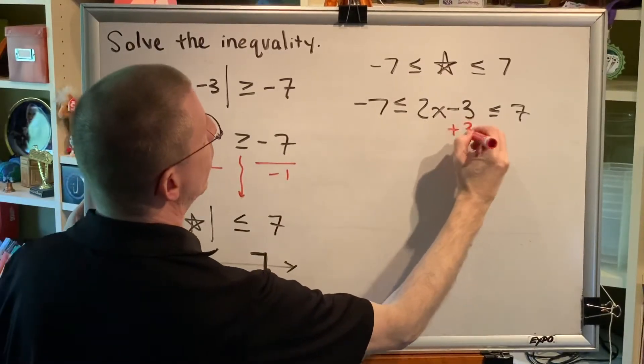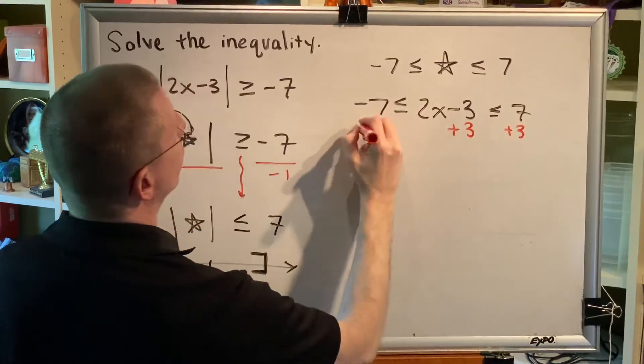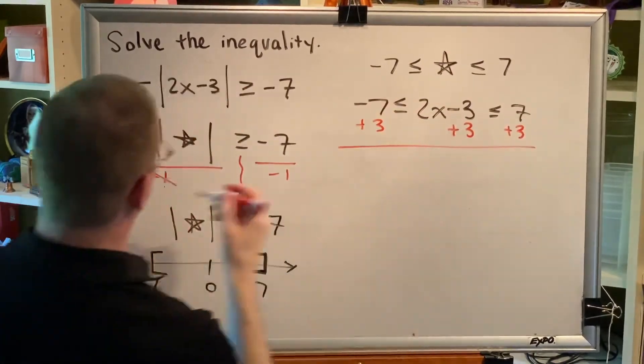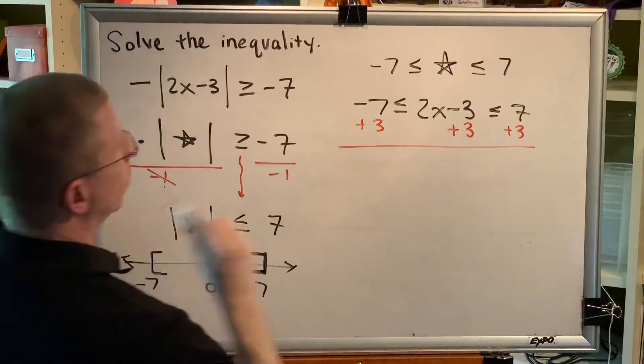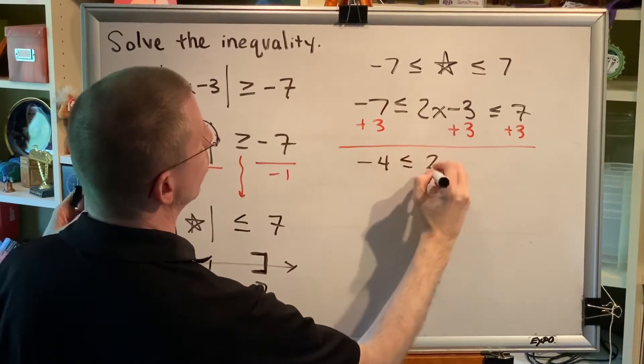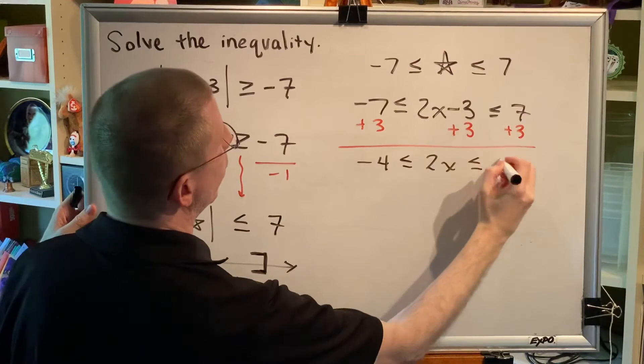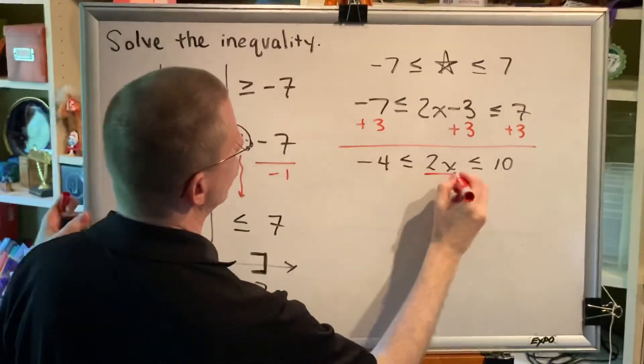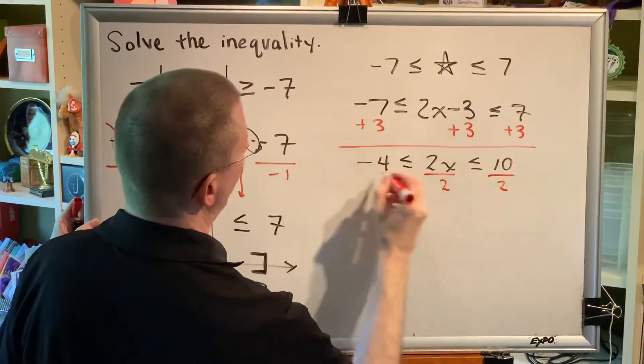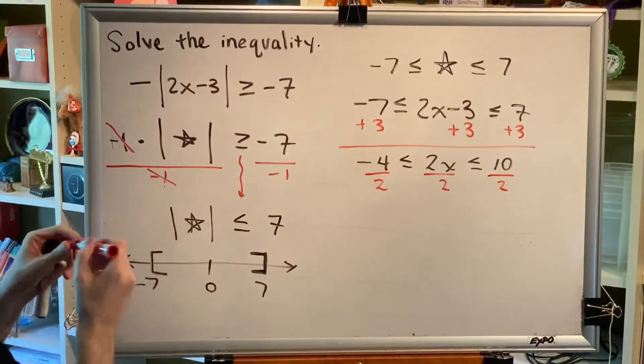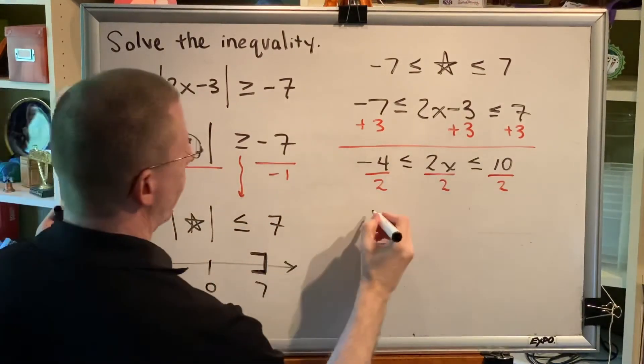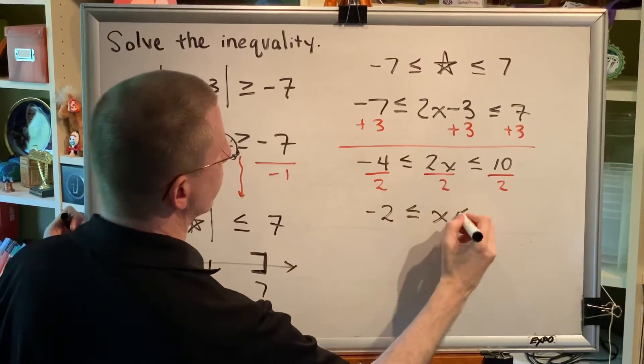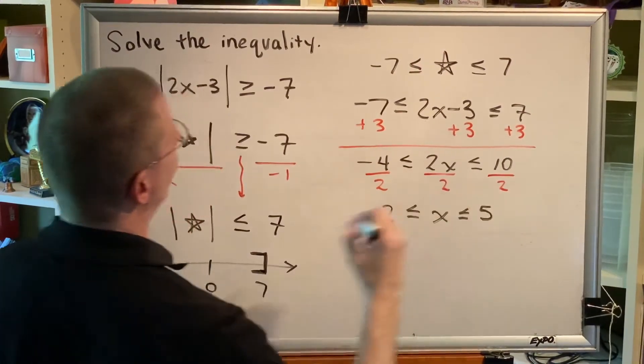Add 3 in the middle, and on the right, and on the left, and we get negative 4 is less than or equal to 2x is less than or equal to 10. Divide both sides by 2. Actually, divide in all three areas. And we get negative 2 is less than or equal to x is less than or equal to 5.